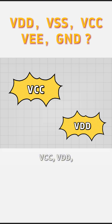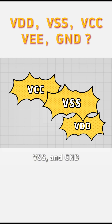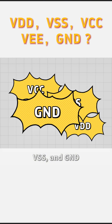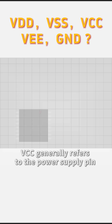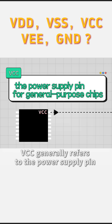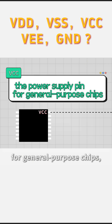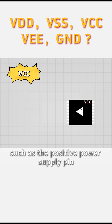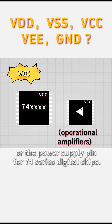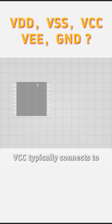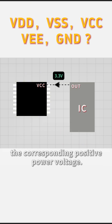VCC, VDD, VSS, and GND are common labels used in electronic circuits. VCC generally refers to the power supply pin for general-purpose chips, such as the positive power supply pin for some operational amplifiers or the power supply pin for 74-series digital chips. VCC typically connects to the corresponding positive power voltage.